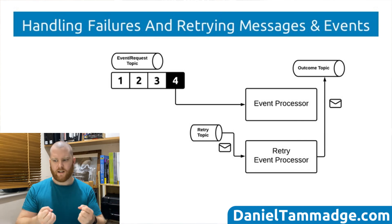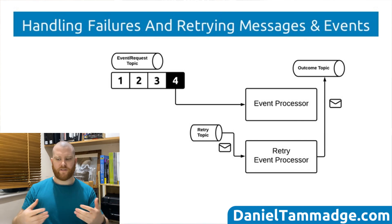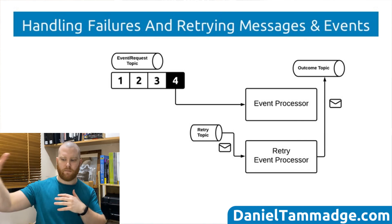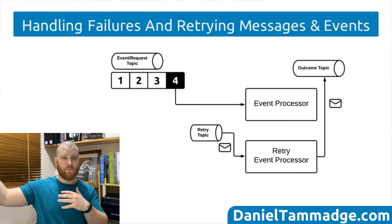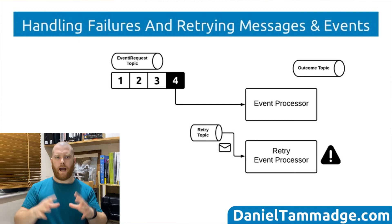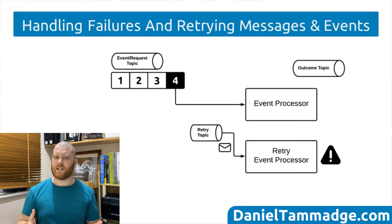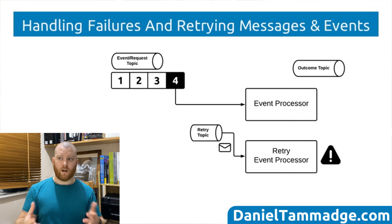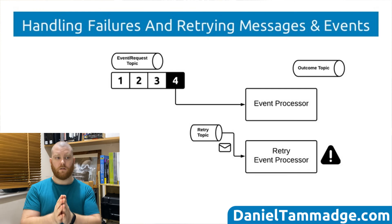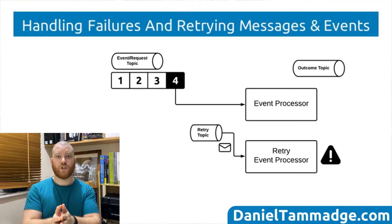The retry event processor would consume the retry topic, process the message, and if it's successful, would publish the result to the same outcome topic. However, you might be thinking: what happens if the retry event processor also encounters an issue? The answer is actually quite straightforward — you publish to another retry topic.